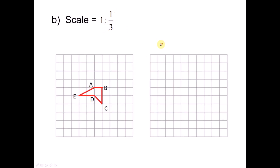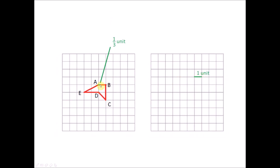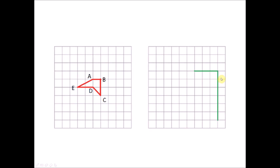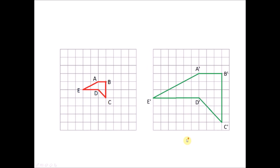For the next exercise, the scale is 1 to 1/3. Every 1 unit I draw represents 1/3 of the object. So for side AB of the object, which is 1 unit, the drawing becomes 3 units. For side BC, which is 2 units of the object, the drawing becomes 6 units. All sides are 3 times the size of the object, so the result is as shown.